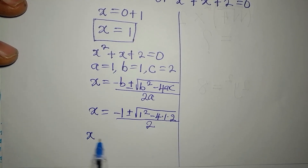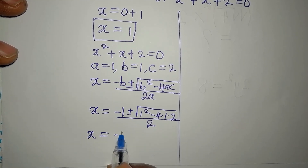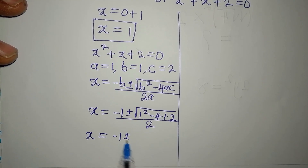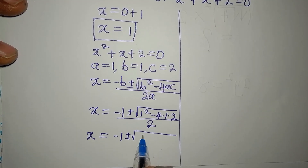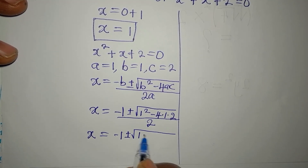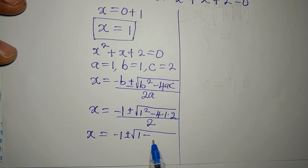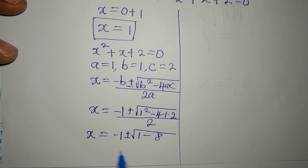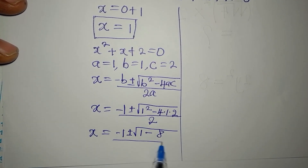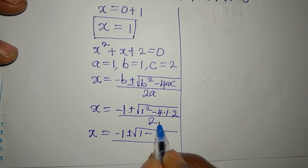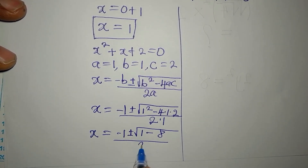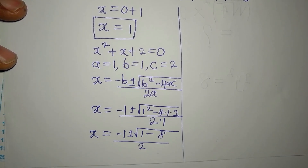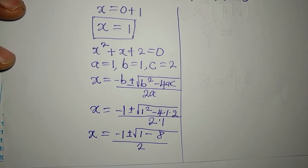Computing the discriminant: 1² = 1, and 4 × 1 × 2 = 8, so we get 1 − 8 = −7. The denominator is 2 × 1 = 2. So x = (−1 ± √(−7)) / 2.